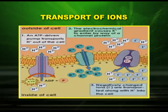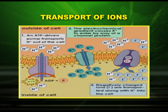The active absorption of mineral ions can be well explained in the following diagram. In the first step, you can see an ATP-driven pump that transports hydrogen ions out of the cell. In the second step, the electrochemical gradient causes potassium ions to enter by way of a channel protein. And in the third step, negatively charged ions are transported along with hydrogen ions into the cell.